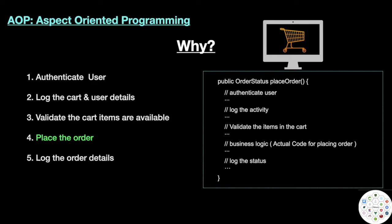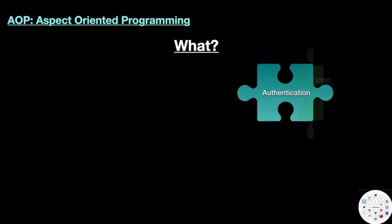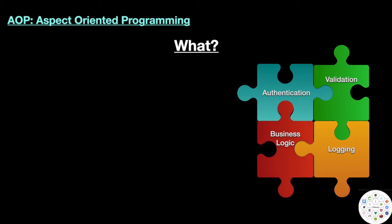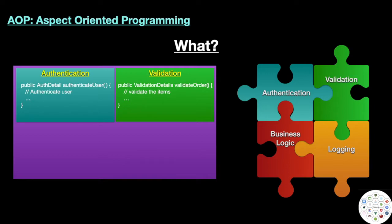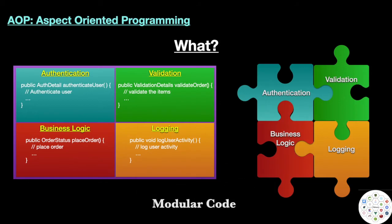Now that we understand why we need AOP, or Aspect Oriented Programming, let's talk about what it is. From our example we have four parts: authentication, validation, logging, and the actual business logic. These can be separated into four individual methods: authenticate user, validate order, log user activity, and place order. Now our code is clean and separated according to functionality.